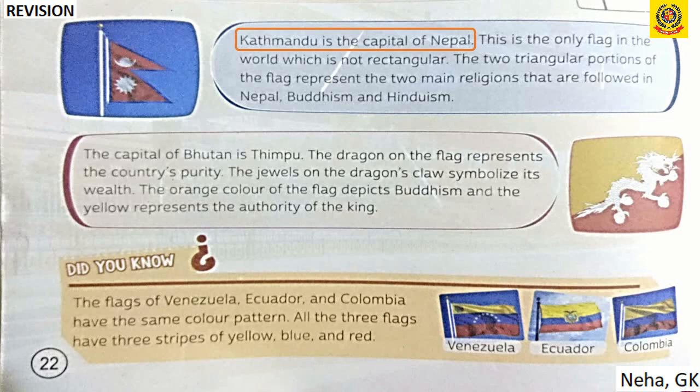The capital of Bhutan is Thimphu. The dragon on the flag represents the country's purity, and the jewels on the dragon's claws represent its wealth. The orange color depicts Buddhism and the yellow represents the authority of the king.